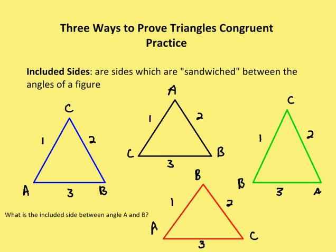One more topic before the third postulate: included sides. An included side is simply the side sandwiched between two angles of a figure — the opposite of an included angle, which was an angle sandwiched between two sides. For example, if I want to find the side included between angles A and C, the side sandwiched between them is side one.